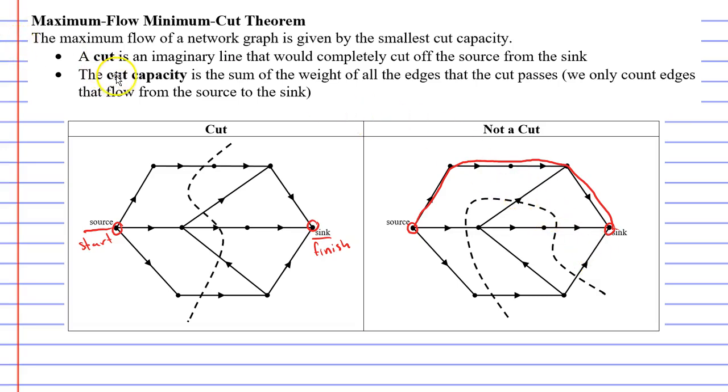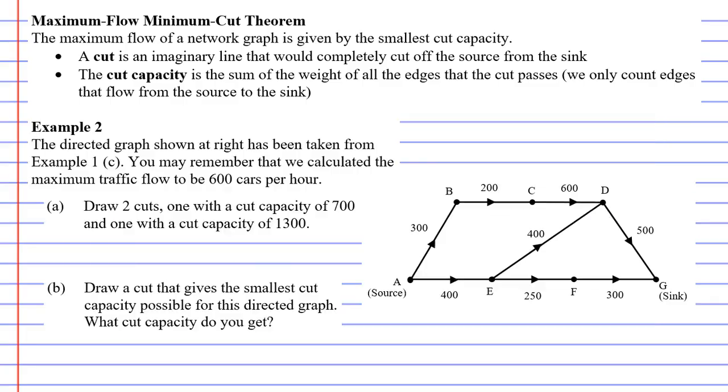The next thing we're going to look at is what is called the cut capacity. And in order to talk about this, we actually need to get right into our example now. Now as I mentioned before, this is the same example that we did in example one. And you might remember that we already calculated the maximum traffic flow to be 600 cars per hour. And we're going to re-solve this question. The difference being that we're going to use a different method. We're using the maximum flow minimum cut theorem.